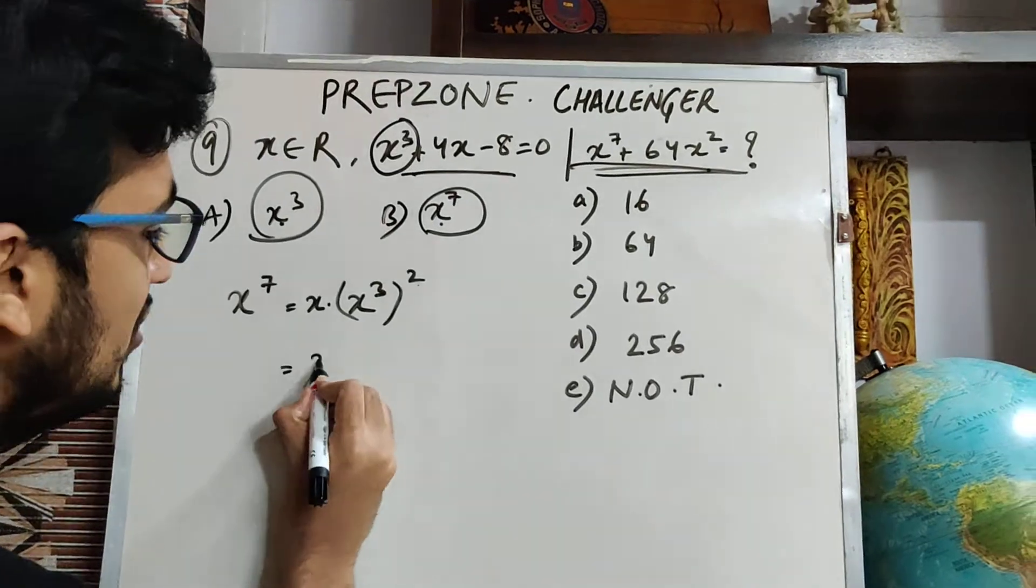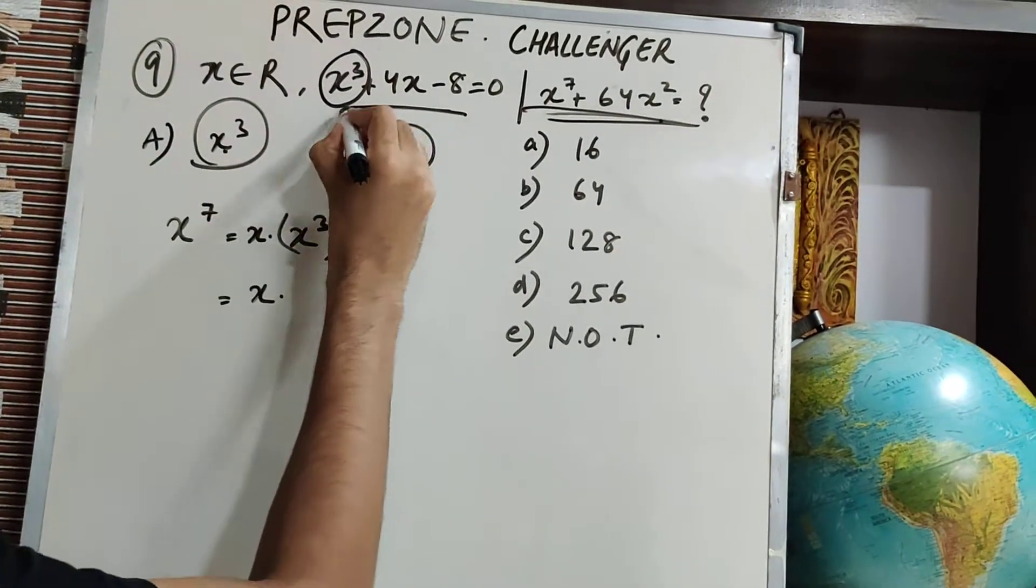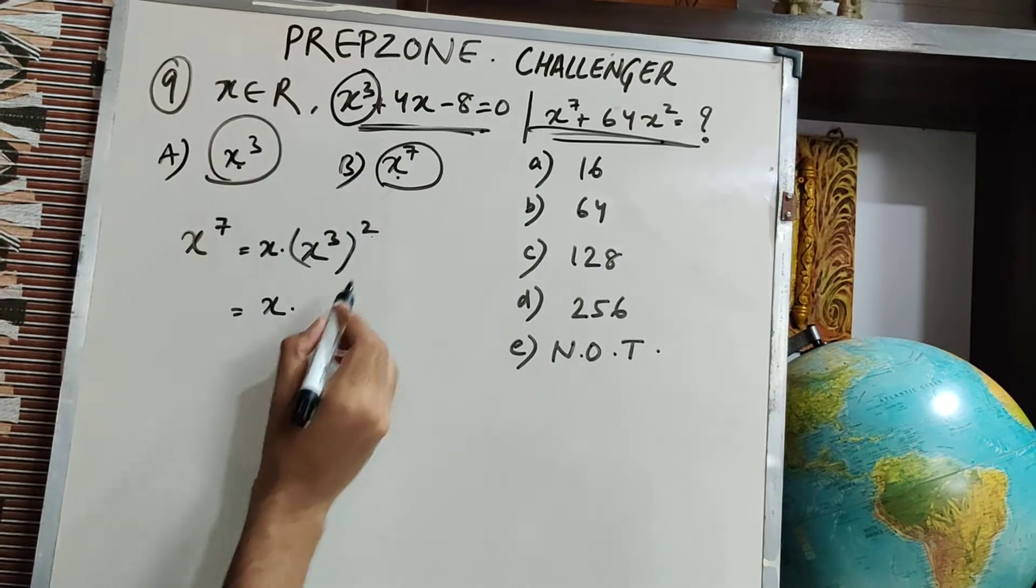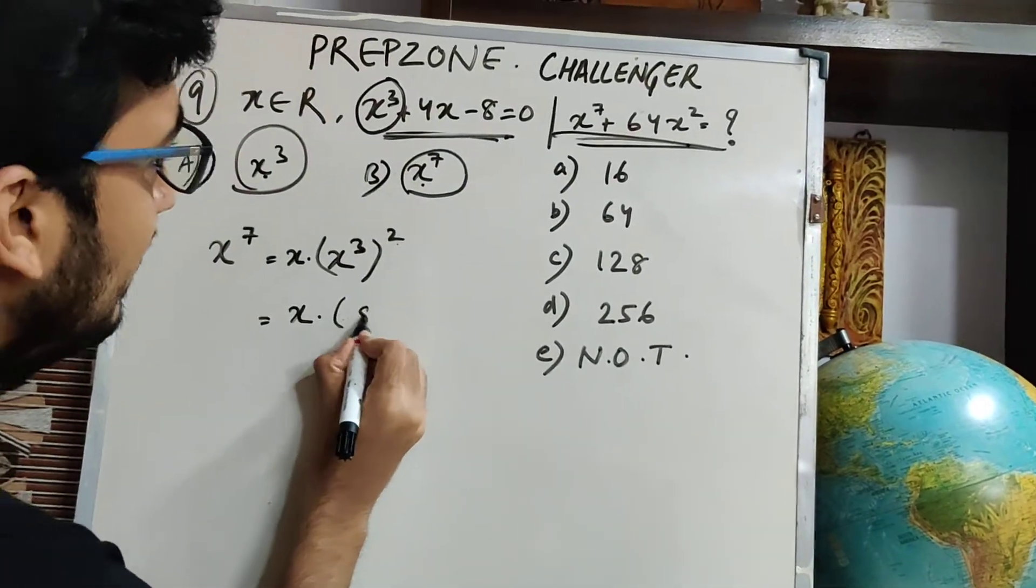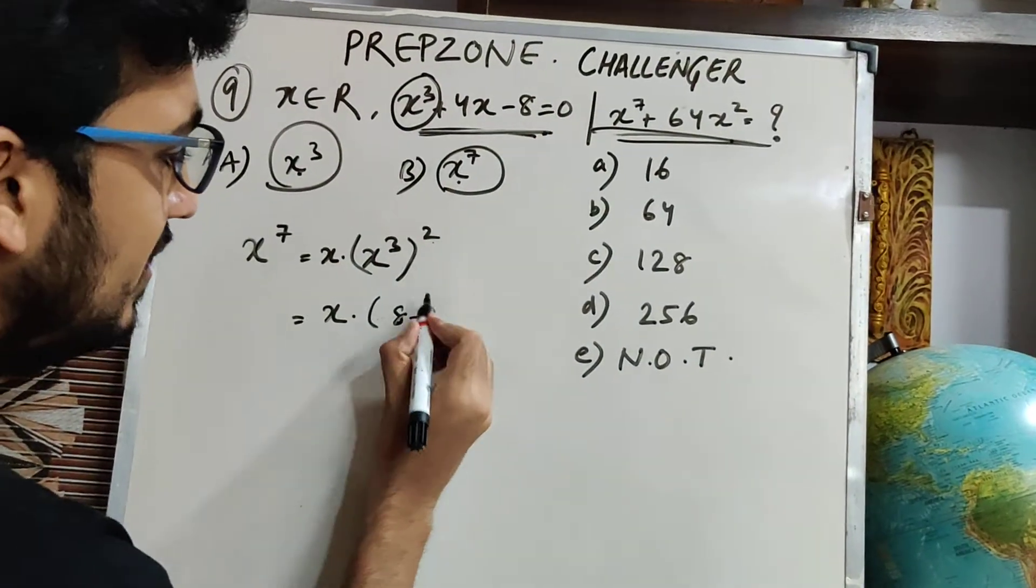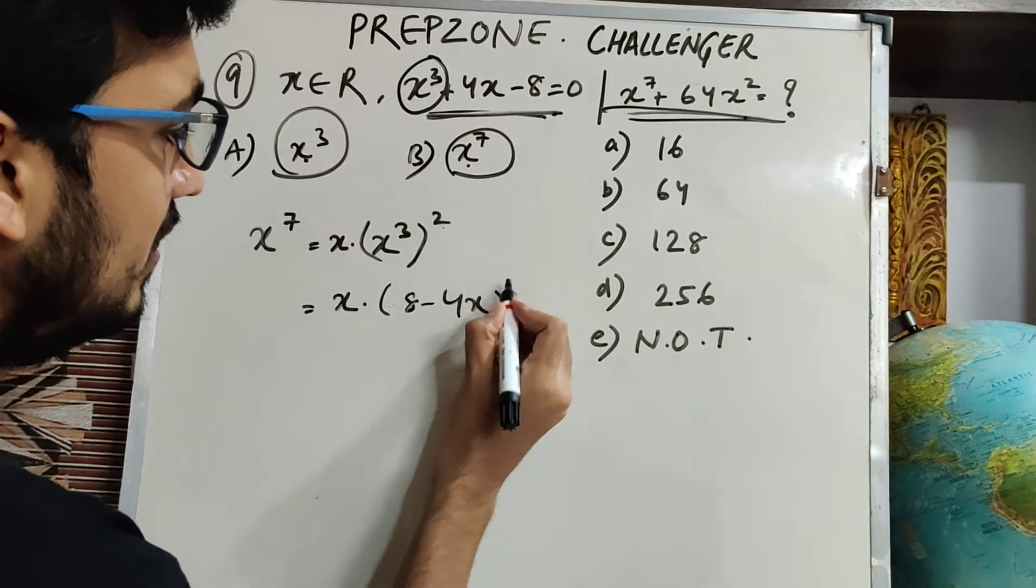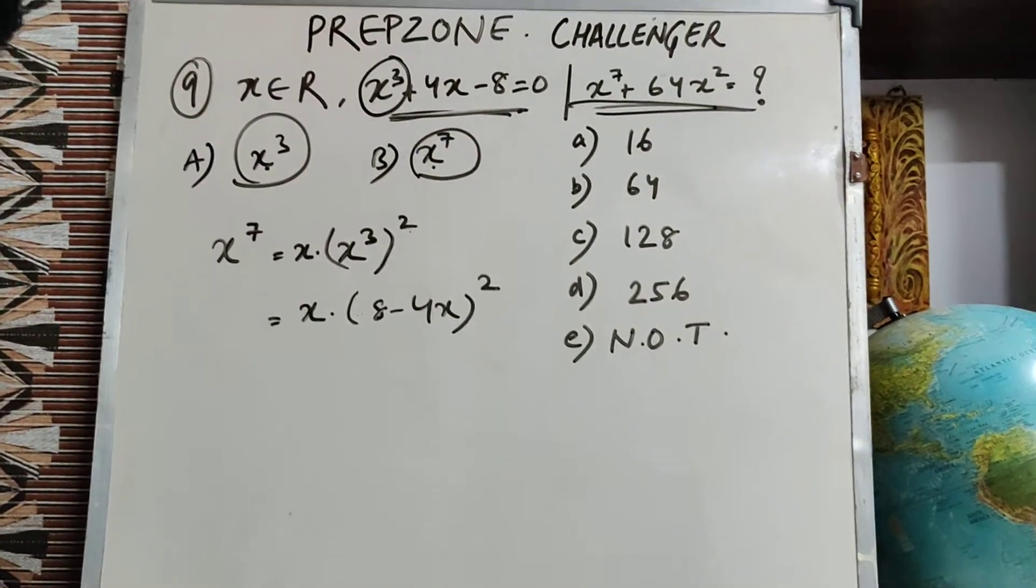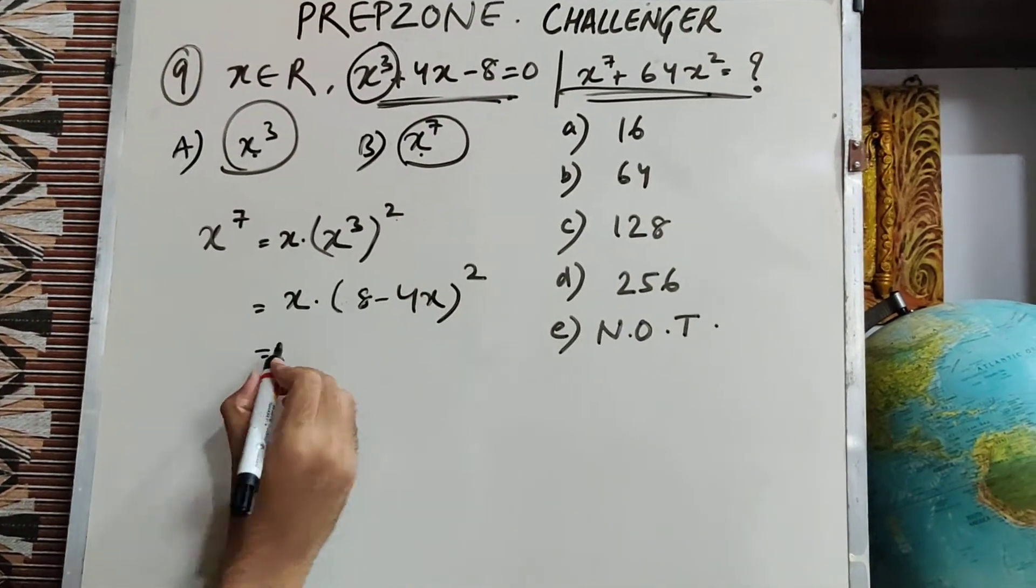Now I have to simplify this. I know that this equation is given, which means x³ value is 8 - 4x, right? I have taken it on the right hand side. So this is (8 - 4x)². Simple as I have done, I will solve it.